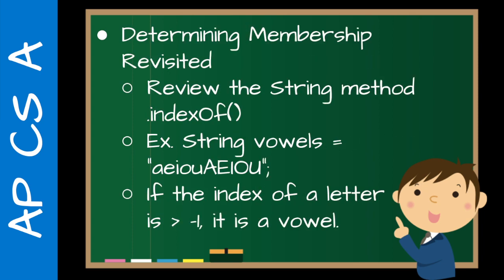Determining membership, revisited. If you recall from the strings unit, we looked at determining is something a member, does something exist in another set, in another collection using index of. So the example I gave there was vowels. So A-E-I-O-U and capital A-E-I-O-U. So now we can actually combine this instead of just printing out true and false like we did earlier. We can do if the index of a letter is greater than negative 1, it is a vowel. So this lets us determine membership.